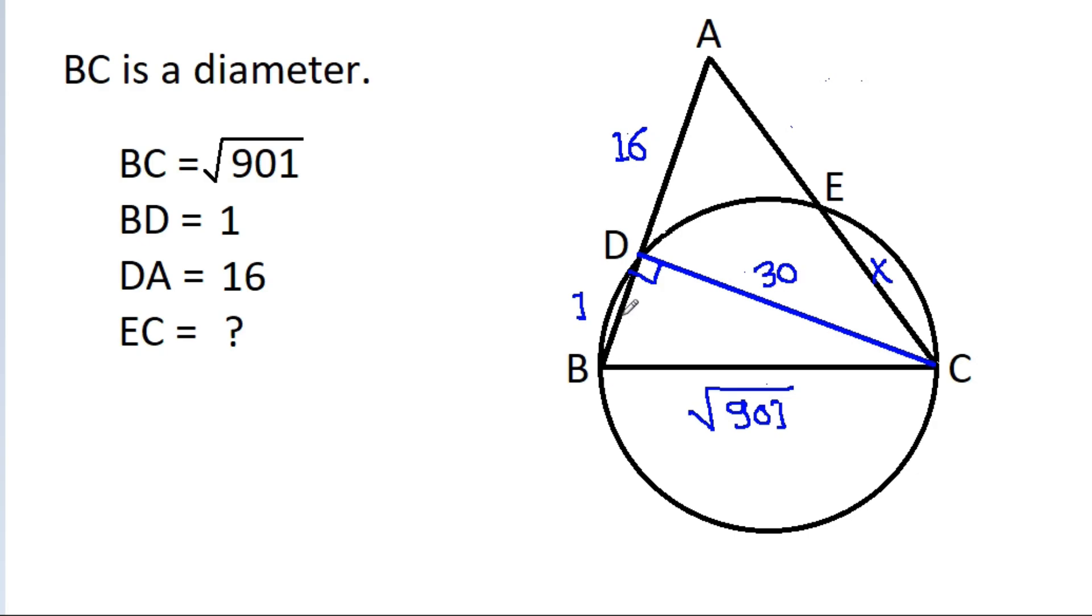And now since angle BDC is 90 degrees, then angle ADC also will be 90 degrees. And now we can use Pythagoras theorem in triangle ADC.